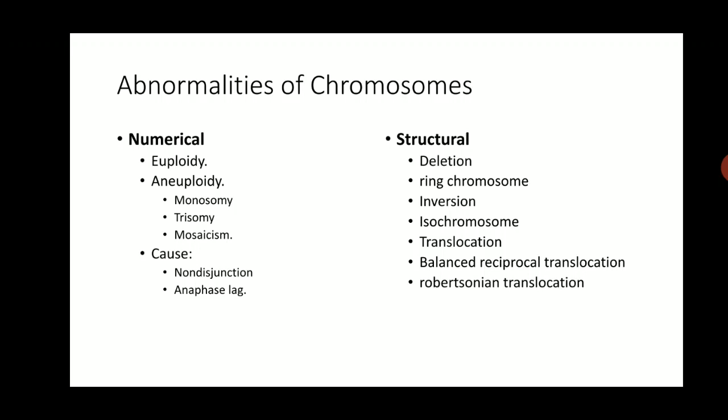The most common causes of aneuploidy are non-disjunction and anaphase lag, which we will discuss shortly. Another way of having a chromosomal disorder is a structural defect. Here the number of chromosomes remains 46, but the structure is abnormal. A big chunk may be lost — known as a deletion — the chromosome may bend to form a ring chromosome, or there can be an inversion, translocation, or isochromosome formation.